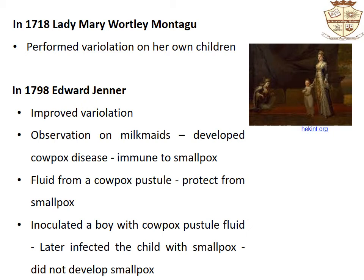This technique of variolation was significantly improved by the English physician Edward Jenner. He observed that milkmaids who had cowpox disease were immune to smallpox. He reasoned that fluid from a cowpox pustule, if introduced into a pupil, might protect them from smallpox. He inoculated an eight-year-old boy with fluid from a cowpox pustule and later intentionally infected the child with smallpox. As correctly predicted by Jenner, the child did not develop smallpox and became immune to the disease.